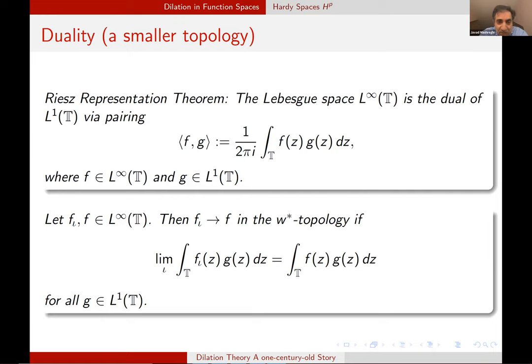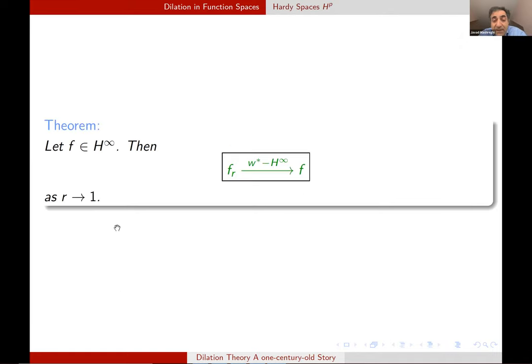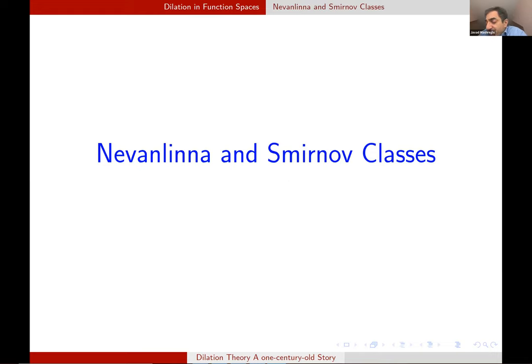And if we sacrifice the topology, this is the theorem which was mentioned in the introduction by Lajos to the famous Riesz representation theorem. L infinity is the dual of L one. So it has a weak star topology on it. And this weak star topology can be inherited by H infinity to as a subset of L infinity. And with that, F_R goes to F, but not in the norm topology, something smaller in weak star topology of H infinity.